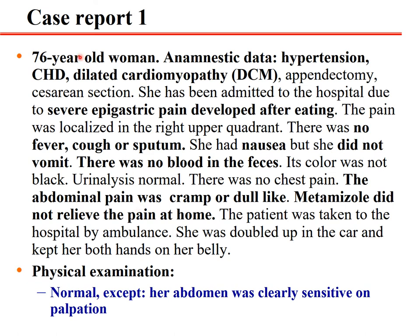Let's see a case report. She is a 76-year-old woman. Her history includes hypertension, cardiac heart diseases, dilated cardiomyopathy, appendectomy, and C-section. She was admitted to the hospital due to severe epigastric pain developing after eating, localized in the right upper quadrant. There was no fever, cough, or sputum. She had nausea but did not vomit. There was no blood in the feces and its color wasn't black. There was no chest pain. The abdominal pain was cramped or dull-like, and antispasmodics did not relieve it at home, so the patient was taken to hospital by ambulance.